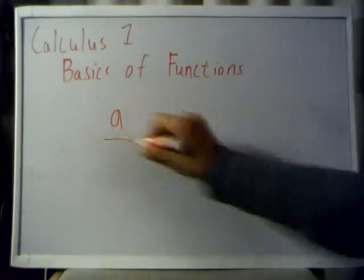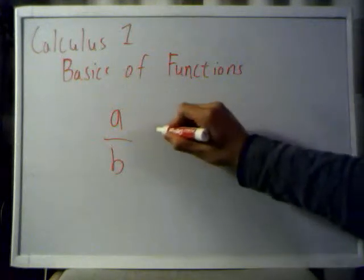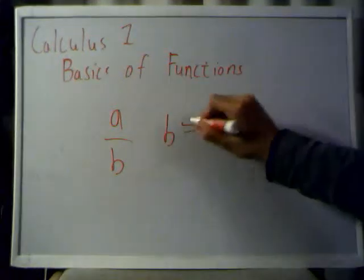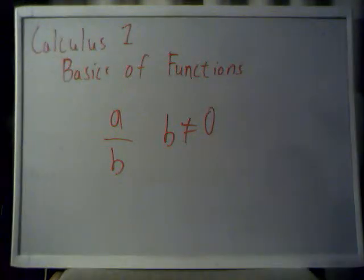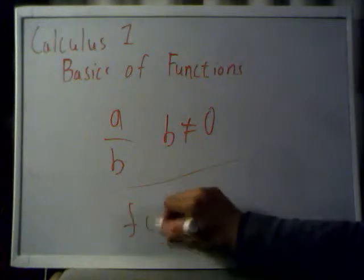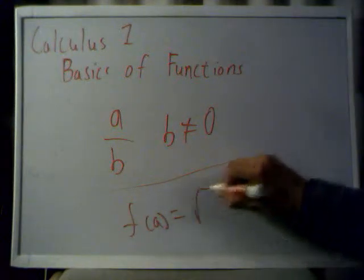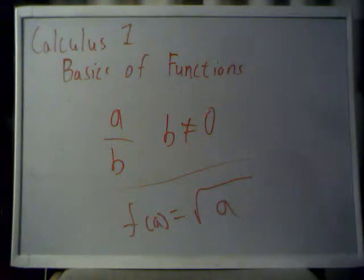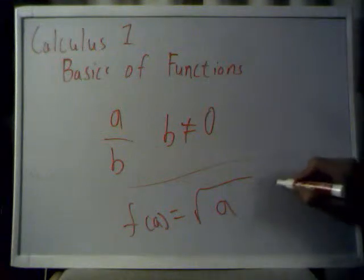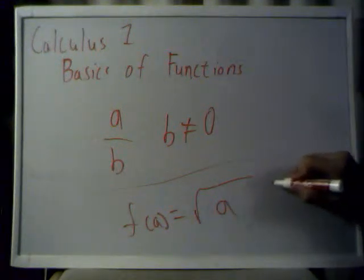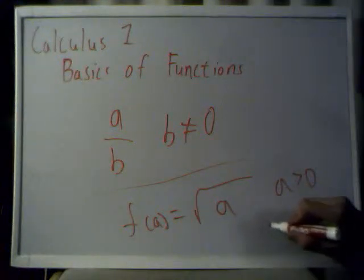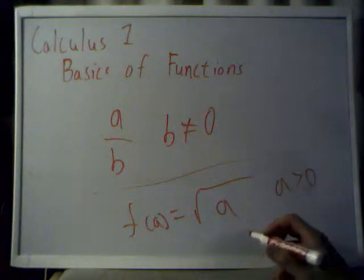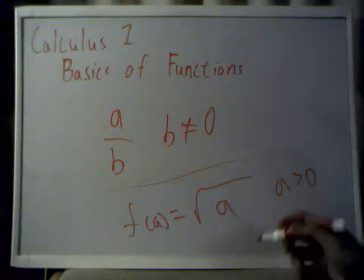The thing to watch for in these kind of problems is there are two rules. The first is, if you have a case where it's a over b, clearly the denominator b cannot be zero. That's one rule you have to remember. The next one is, if f of a is equal to the root of a, you can't take the square root of a negative number since a has to be zero or greater — since squares are always positive, you cannot have a negative root of a square number. So these are the two rules that you have to watch for.